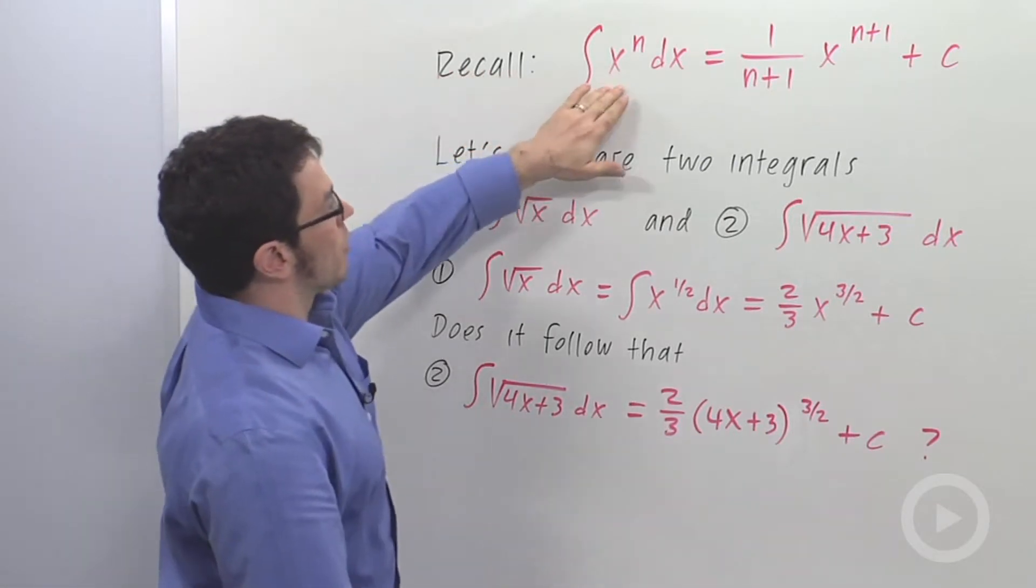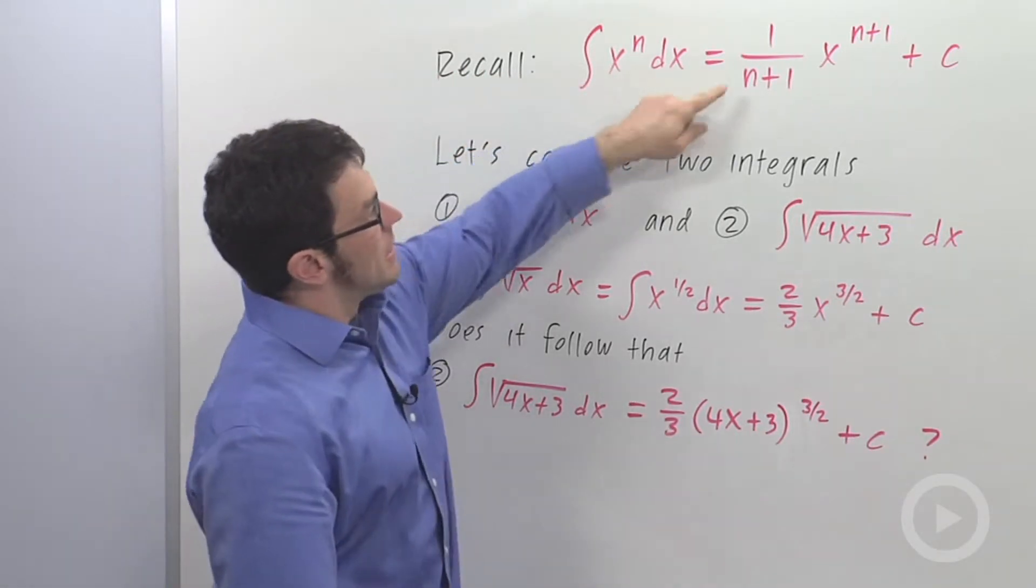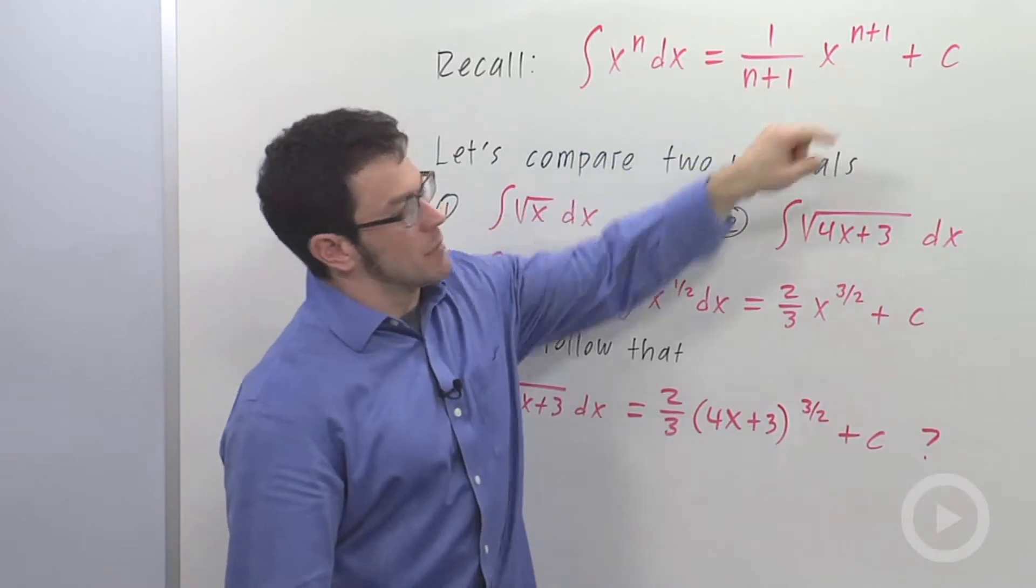First of all, recall the power rule for antiderivatives. The integral of x to the n is 1 over n plus 1, x to the n plus 1, plus c.